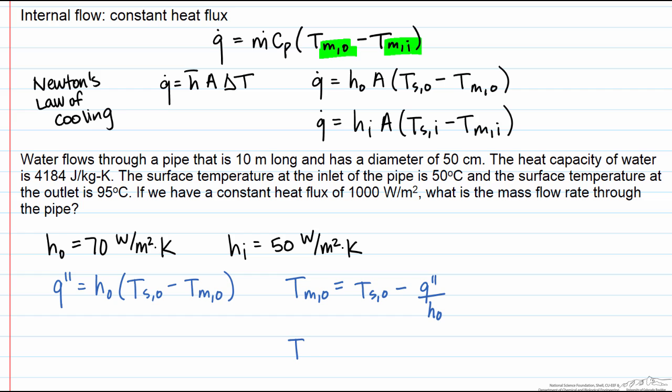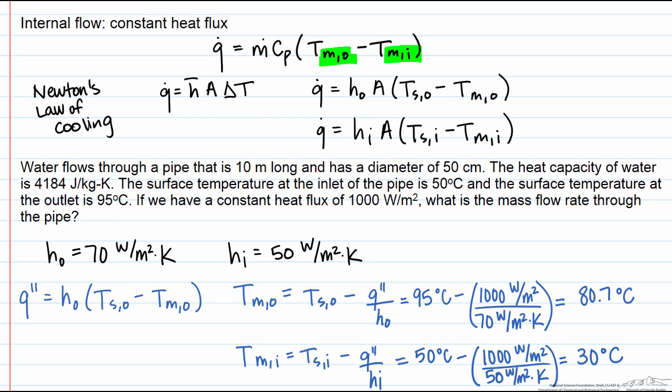If we calculate these quantities, we find that at the outlet, our mean outlet temperature is going to be equal to 80.7 degrees C. We do the exact same thing for the inlet, making sure we use the surface temperature at the inlet as well as the heat transfer coefficient, and we come out with 30 degrees C.